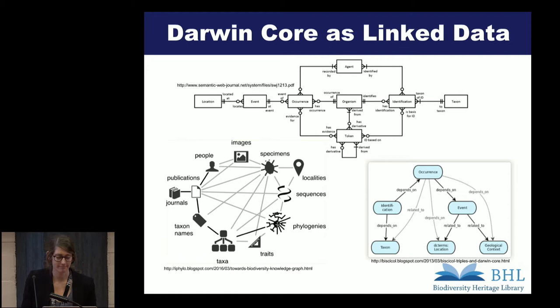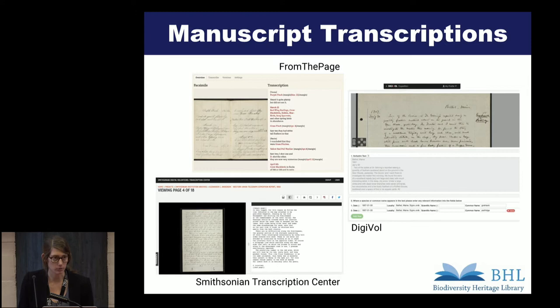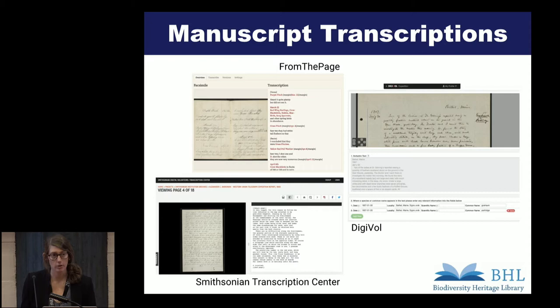Several of our member institutions are already engaged in crowdsourcing transcription programs. These are the three platforms that are probably most widely used. They turn images of manuscript items into machine-readable text, but they have a lot of different levels of encoding that they support. Some of them can only give you plain text. Some can encode it completely into TEI XML. And we have some people starting to implement IIIF and using the open annotation data model and the web annotation data model.